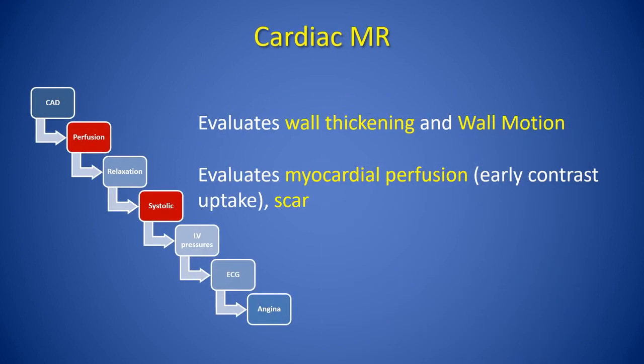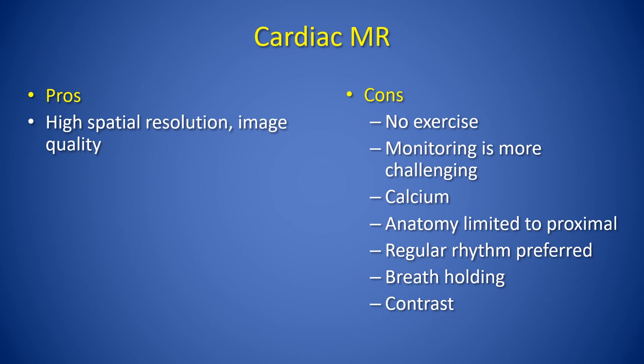Cardiac MRI for ischemia testing evaluates wall thickening and wall motion in a similar fashion to stress echo. It can evaluate myocardial perfusion with early contrast uptake and, importantly, it can detect scar. Advantages of cardiac MRI include detection of scar and high spatial resolution image quality. On the other hand, no exercise can be performed, there are monitoring difficulties in the presence of calcium and irregular rhythms, and the need for breath-holding among other technical difficulties can limit this study's potential.